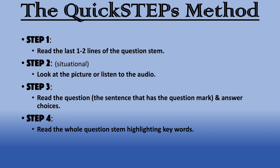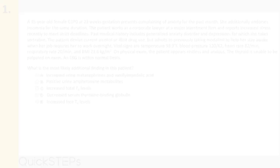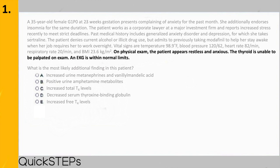Approaching questions in this manner will make you faster and more efficient come test day. Don't worry if the steps don't make much sense yet — we will pull up the first question and I'll go over each step with you. So here's question one. Let's start with step one of our method where we read the last one or two lines of the question stem: on physical exam the patient appears restless and anxious, the thyroid is unable to be palpated on exam, and EKG is within normal limits.